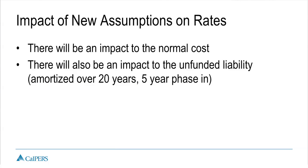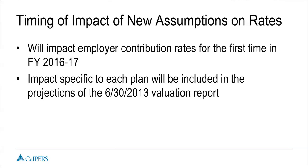To summarize the new assumptions' impact on your rate: you will see a change to your employer normal cost — relevant due to PEPRA rules — and a change in your unfunded liability rate. The rate changes will remain in effect for 20 years, with costs phased in over five. The first time employers will see increases will be the 16-17 fiscal year. The specific impact of the assumption change will be incorporated in the projections of your 2013 valuations. Ask your actuary to help you interpret the information — this is important.